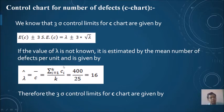This comes out to be equal to 16. Summation ci is the addition of the number of defects column, k is the number of samples, which is 25. So we get the estimated value of lambda as 16.